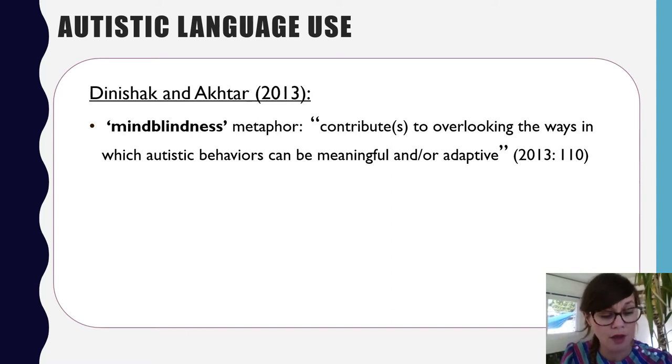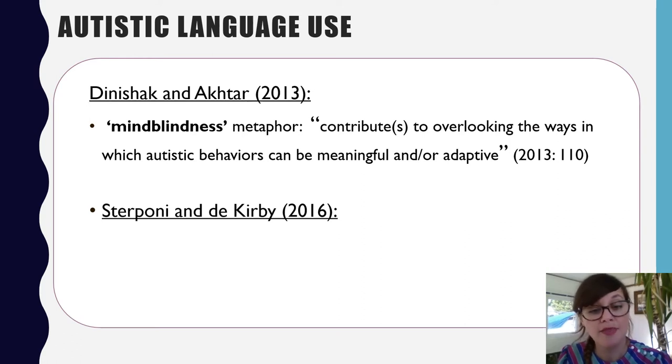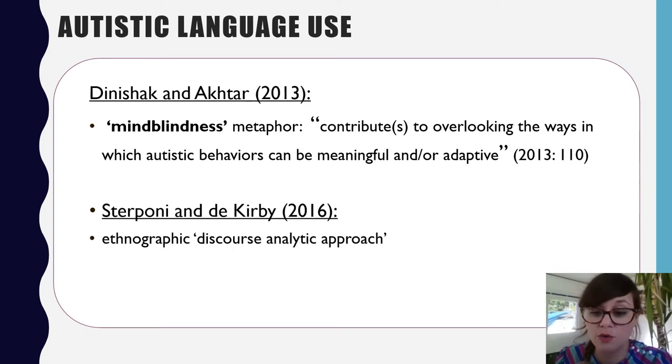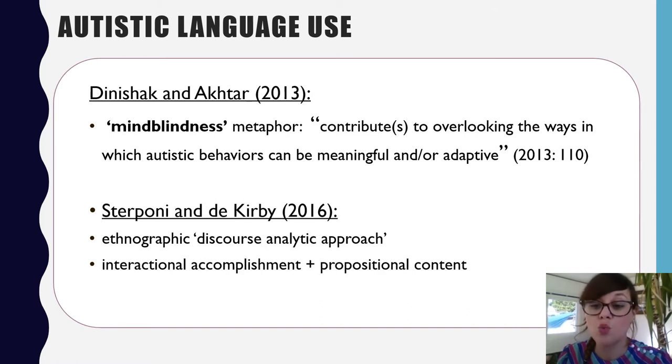Sterponi and de Kirby's 2016 multi-dimensional reappraisal of language and autism shares this theme, and I highly recommend this paper. They had a really interesting approach. They take an ethnographic discourse-analytic approach that takes into account an utterance's interactional accomplishment as well as its propositional content, and they applied this to a small corpus of naturalistic communication between young autistic children and familiar neurotypical adults.